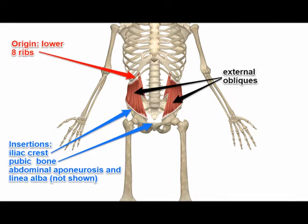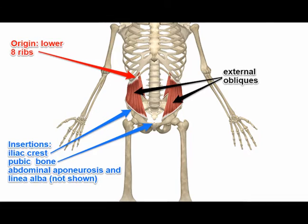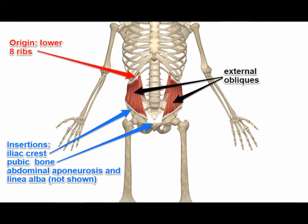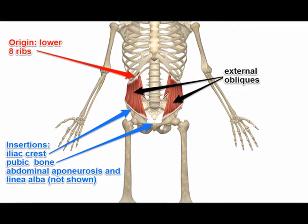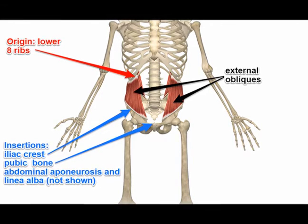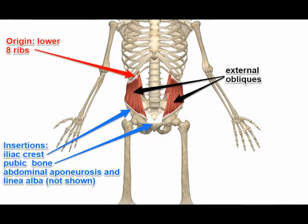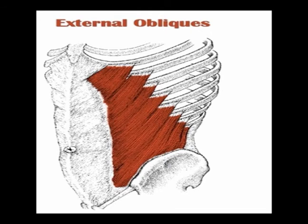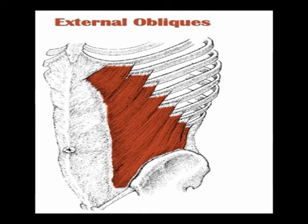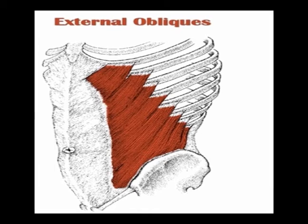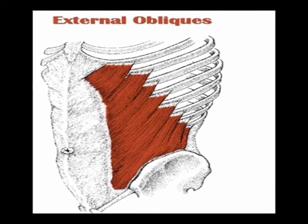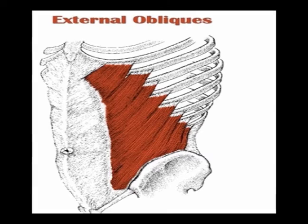The external obliques originate on the external surface of ribs 5 through 12. The fibers run anterior and inferior, which is perpendicular to the fibers of the internal obliques, which run anterior and superior.